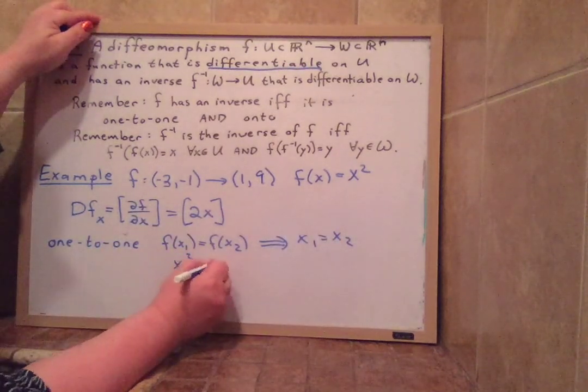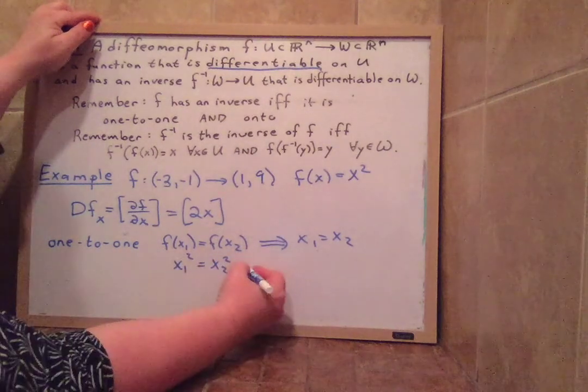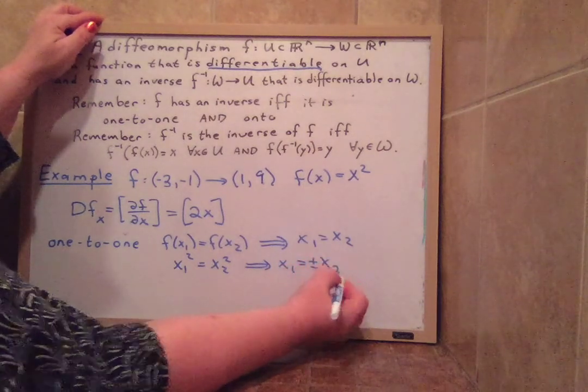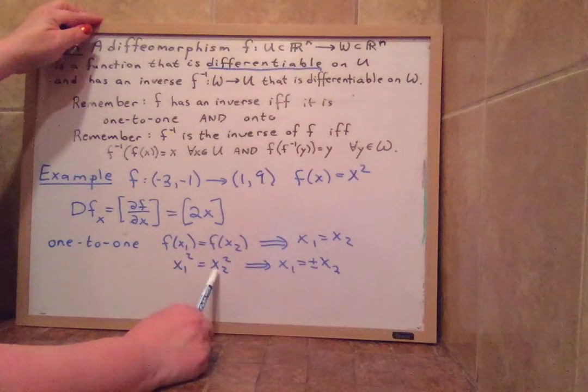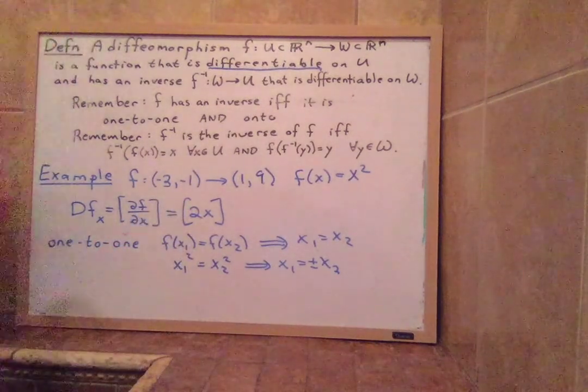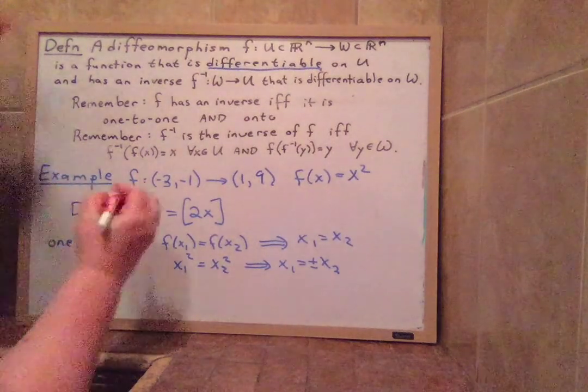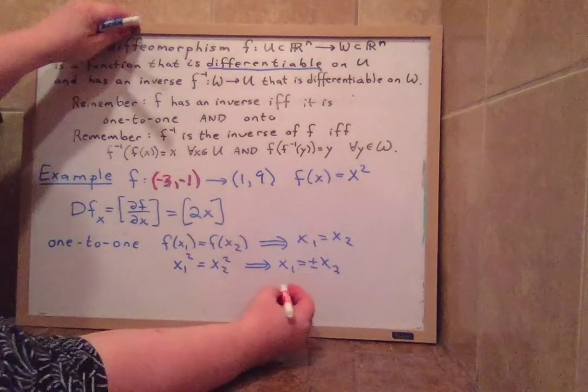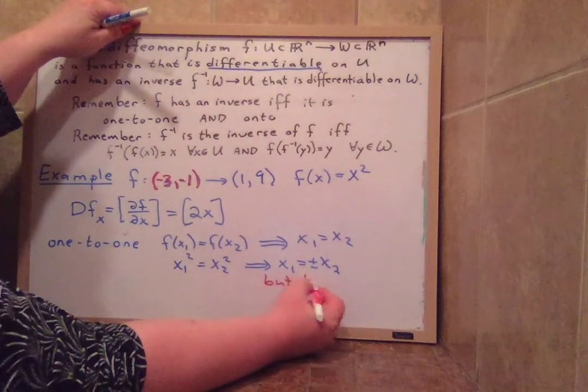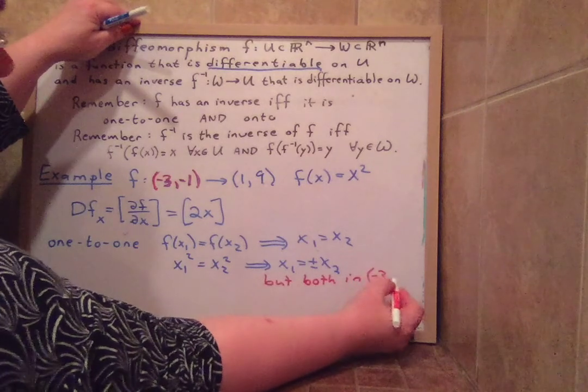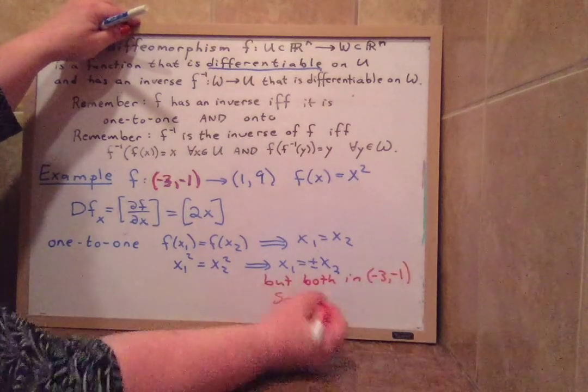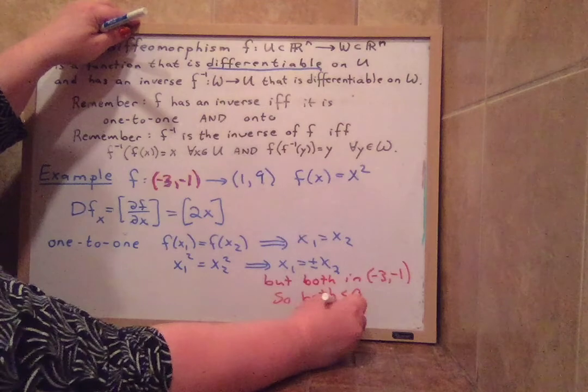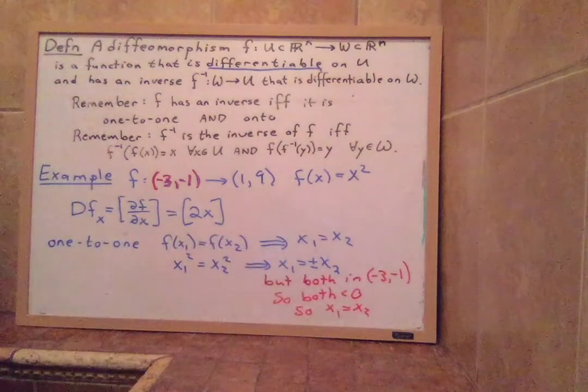So we check. x1 squared equals x2 squared. If we take square rooting on both sides, that would give us x1 equals plus or minus x2. That seems to be a problem because negative numbers squared give the same value as positive numbers squared. But then look at our domain. Our domain is only negative three to negative one. So we only choose the negative one. But both are in negative three to negative one, so they're both negative. So x1 actually equals x2. So this is one-to-one. Yes.